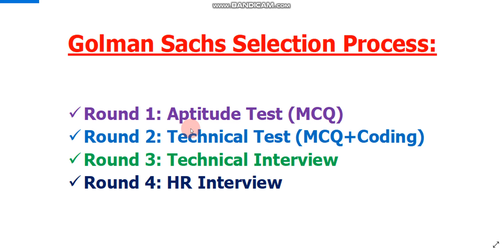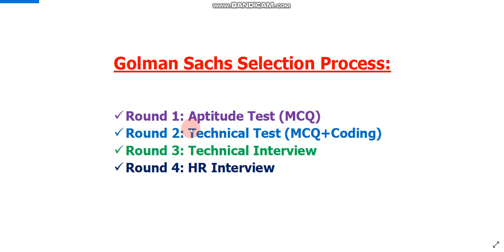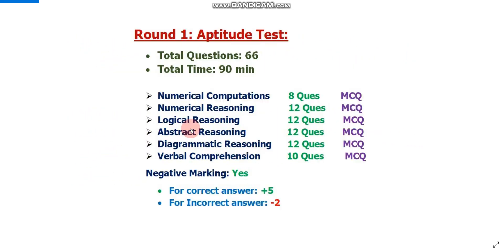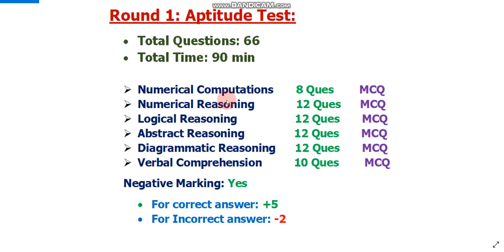Now let's discuss each round in detail — syllabus and exam pattern. Round one is the aptitude test. There will be a total of 66 questions to solve in 90 minutes. In round one there will be six different sections. Section one is numerical computations, where you need to solve 8 questions.